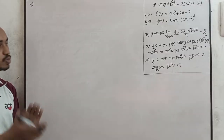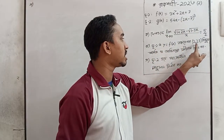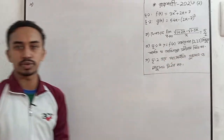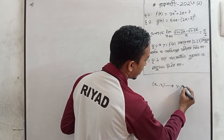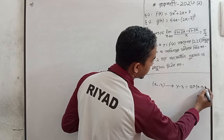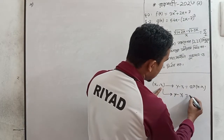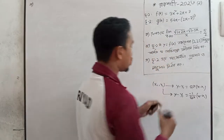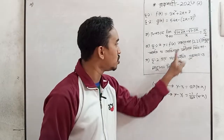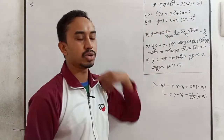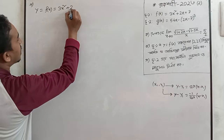Now we have to take the second question. Here the question goes: y equals f of x. The function f of x, we have to find the tangent. So y minus y1 equals x minus x1. Here x1, y1 is equal to 2. We have y equal to f of x, which is 3x squared plus 2x plus 7.